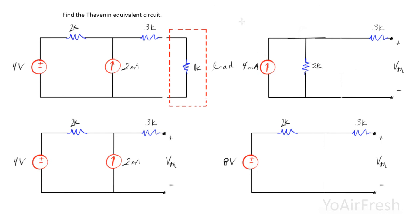So actually the voltage right here is going to be 8 volts. So just to recap, our Thevenin resistance is 5k ohms, and our Thevenin voltage is 8 volts.